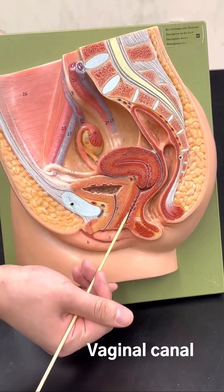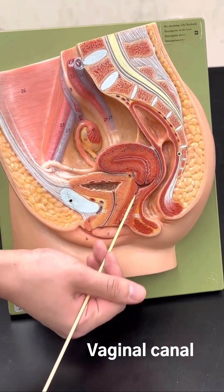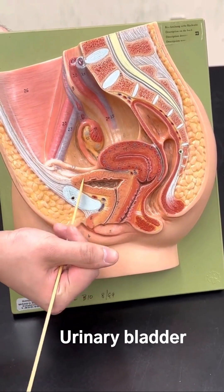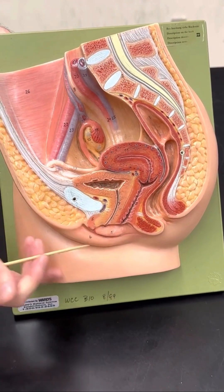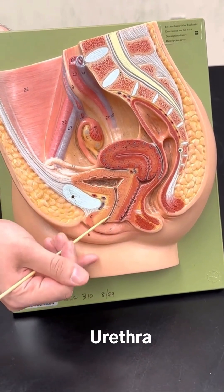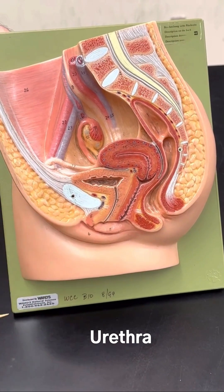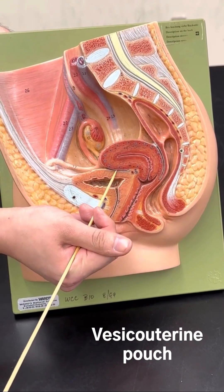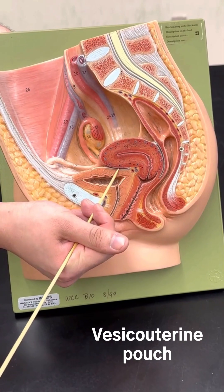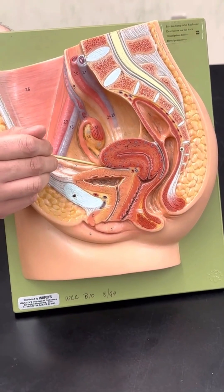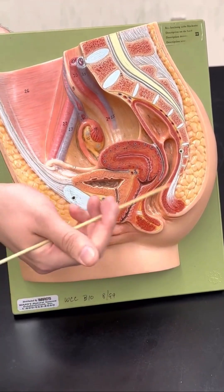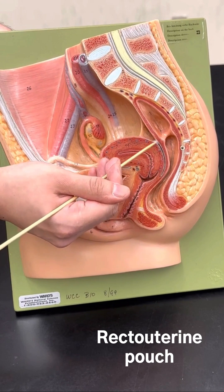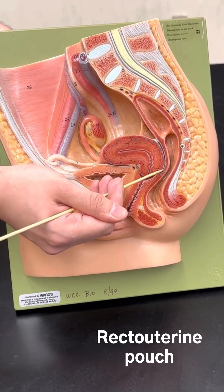Next we have the vaginal canal, and then we have the urinary bladder here, and the urethra. In between the urinary bladder and the uterus we have the vesicouterine pouch, and then in between the uterus and the rectum we have the rectouterine pouch.